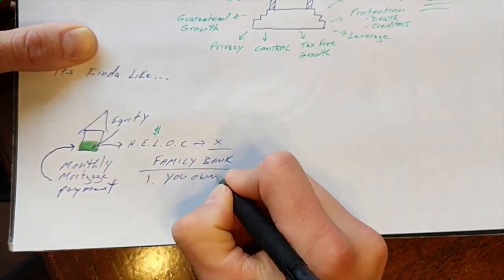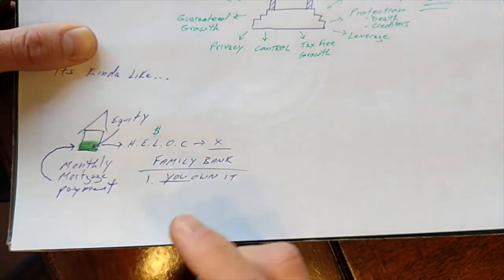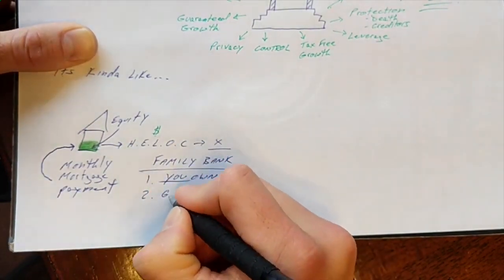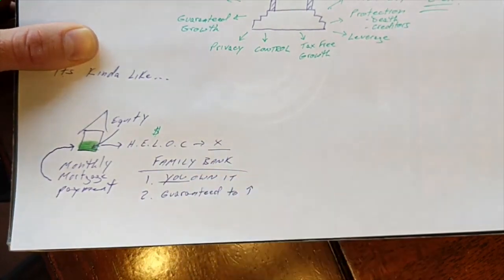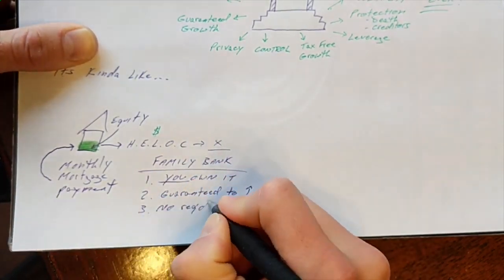One, with the family bank, you own it, which means you control it. Two, it's always guaranteed to increase, unlike your house. And three, there's no required repayments.